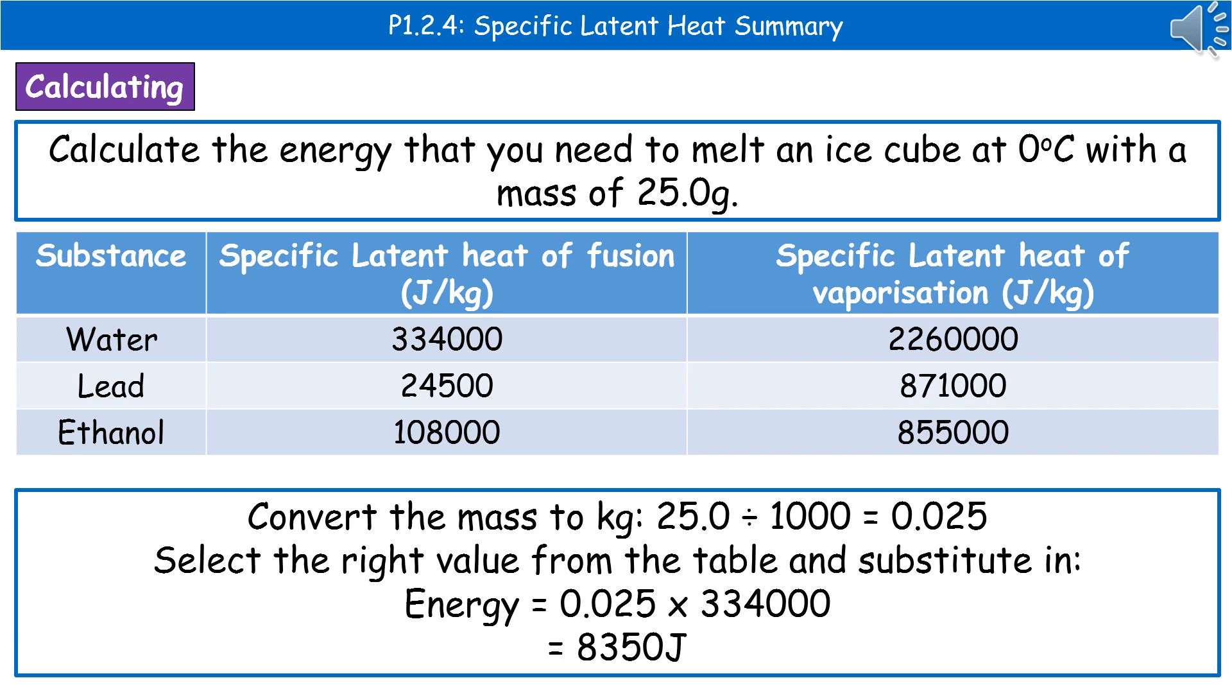So once we've got that information we can substitute it into our equation. So 0.025 times 334,000 gives us our answer of 8,350 joules.